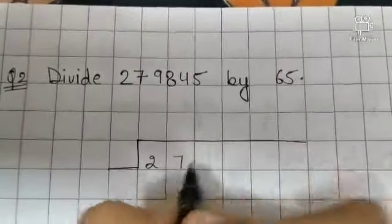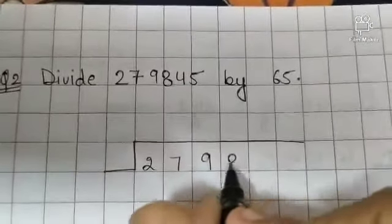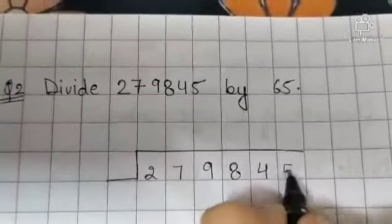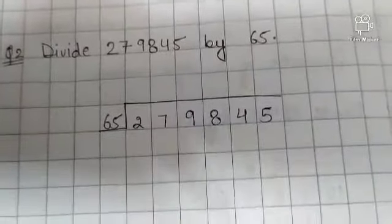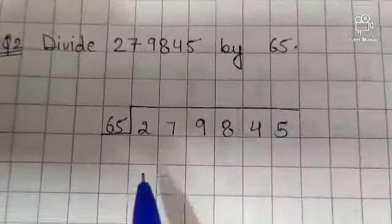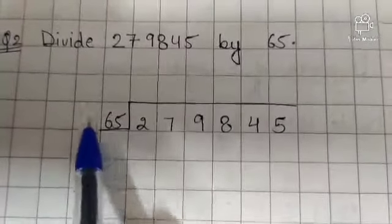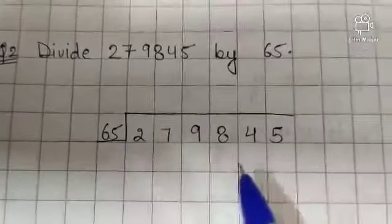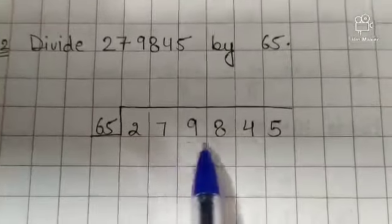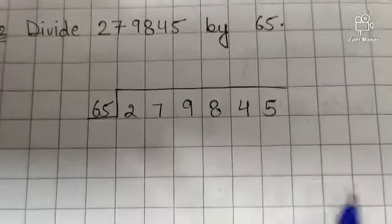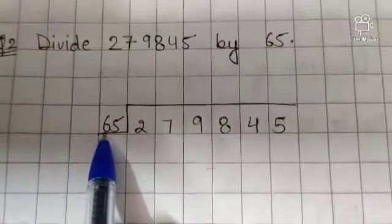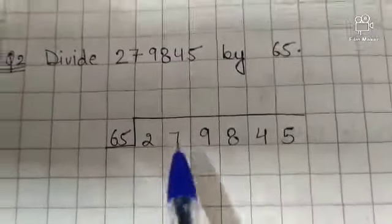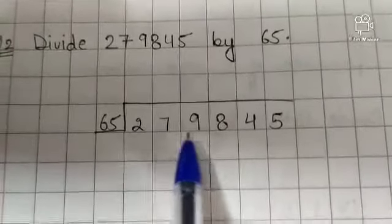2, 7, 9, 8, 4, 5 by 65. Now see children, divisor is a 2 digit number and dividend is a 6 digit number. So take the first digit of the divisor and divide 27 by 6.